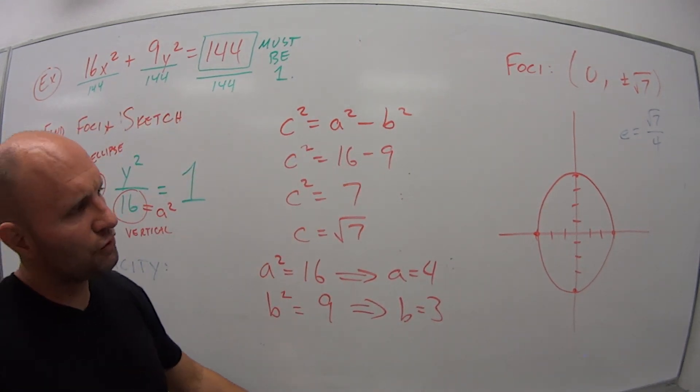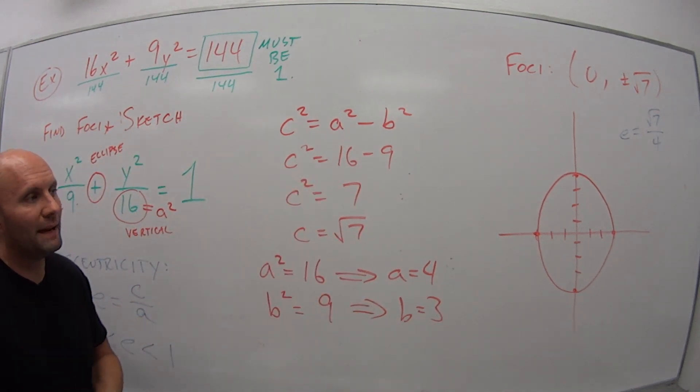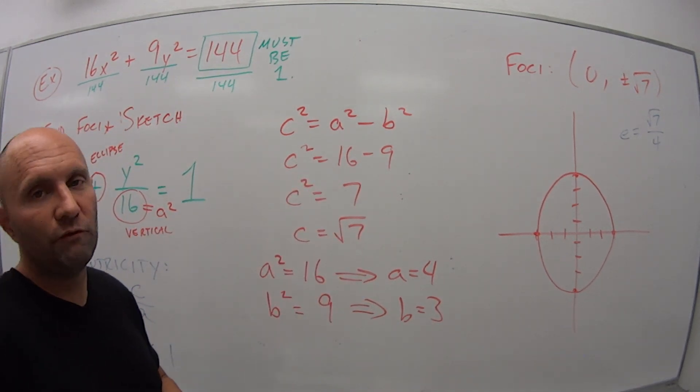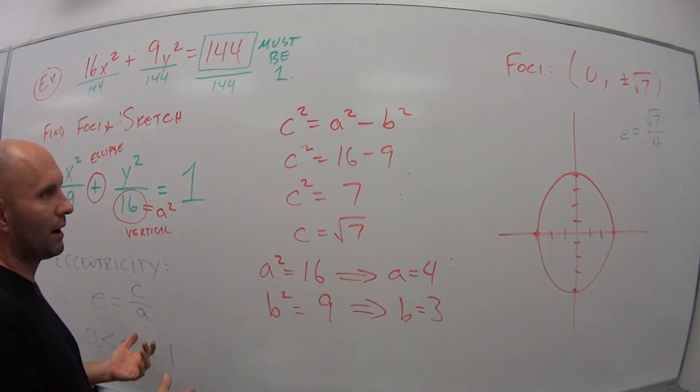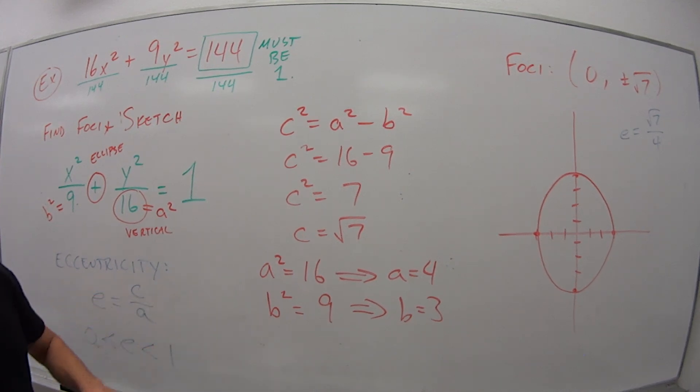Again, it sometimes shows up, sometimes doesn't. That's why I didn't put it on that main chart from video one. But it's good to know. It doesn't matter if it's a vertical or horizontal ellipse. It'll still have the same formula, c over a. If you're asked to calculate it, just eccentricity equals c over a.